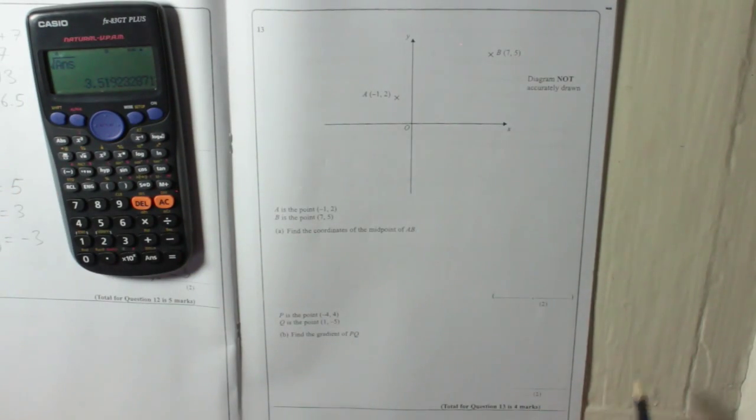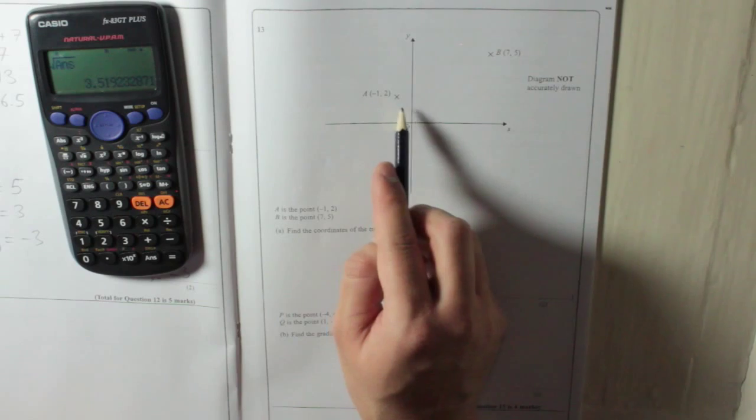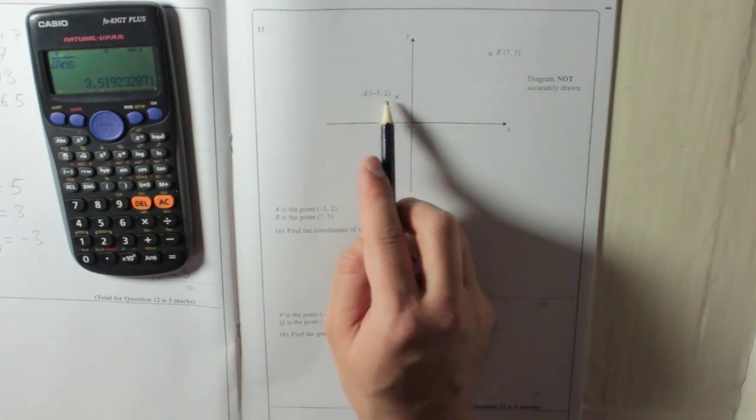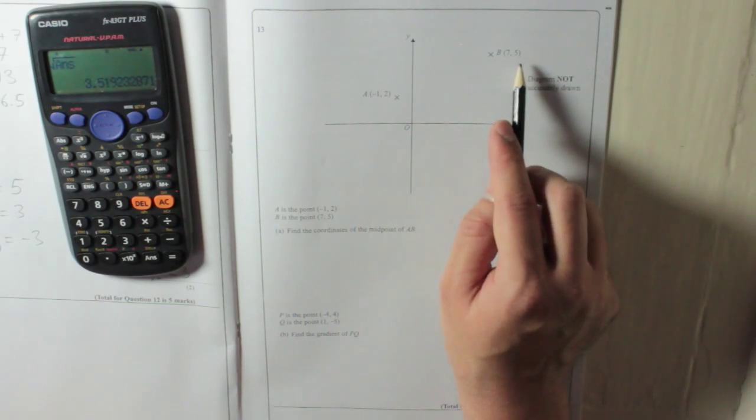Question 13. You have a graph with two points, A at minus 1, 2, and B at 7, 5.